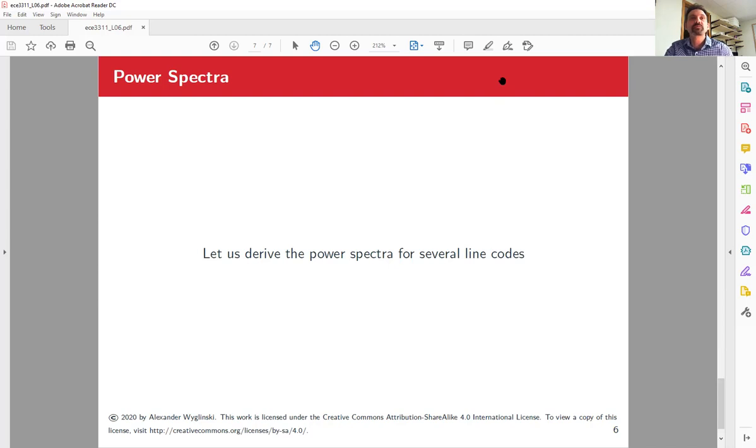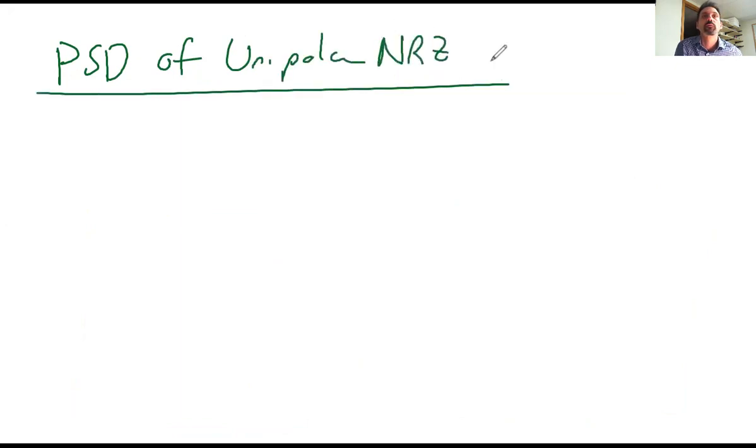And you should be, for any class tests or anything in the future, you should be very comfortable to derive the power spectral density for any line code I send your way. So let's say we wanted to do the power spectral density of unipolar non-return to zero. So what does that mean? A_n is either a positive amplitude or zero. We're going to make the assumption that either binary 1 or binary 0 is equally likely.